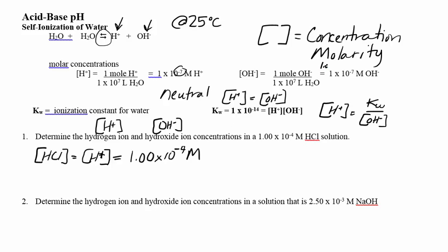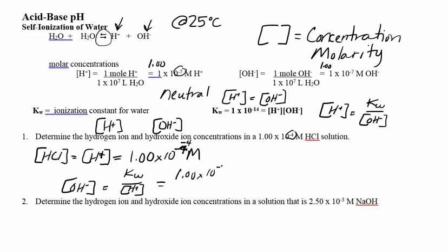For significant figures, we'd say this is 1.00×10⁻⁴. Now I want the hydroxide, so I'll use KW: KW divided by hydrogen. KW is 1×10⁻¹⁴, divided by 1×10⁻⁴. So my hydroxide concentration is 1×10⁻¹⁰.